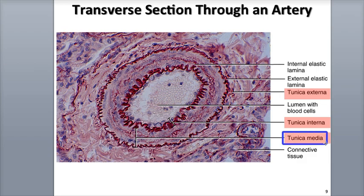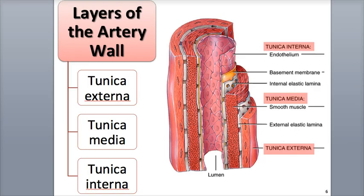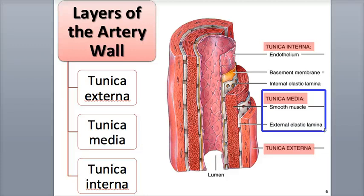The tunica media's main function is to adjust the diameter of the blood vessel's lumen, either decreasing it through constriction or increasing it through dilation. This has a significant effect on the regulation of blood pressure and the rate of blood flow. When the smooth muscle contracts during vasoconstriction, usually triggered by stimulation of the sympathetic division of the autonomic nervous system — the fight-or-flight system — the lumen decreases in diameter.